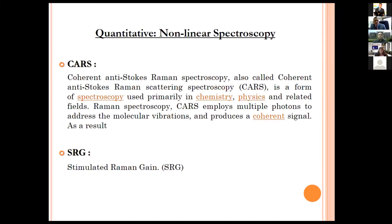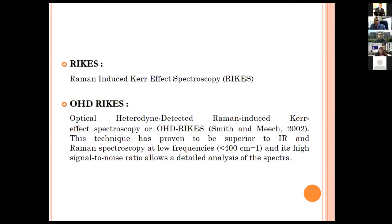CARS — Coherent Anti-Stokes Raman Spectroscopy — is a form of spectroscopy used primarily in chemistry, physics and related fields. Like Raman spectroscopy, CARS employs multiple photons to address molecular vibrations and produces a coherent signal. SRG is Stimulated Raman Gain. RICS is Raman Induced Kerr Effect Spectroscopy and OHD-RICS is Optical Heterodyne Detected Raman Induced Kerr Effect Spectroscopy. Schmidt and Meech in 2002 did significant work in this area; this technique has proven superior to IR and Raman spectroscopy at low frequencies with a high signal-to-noise ratio.